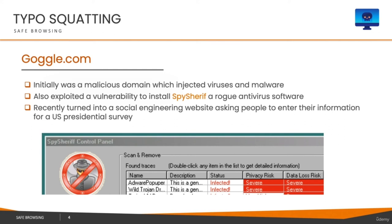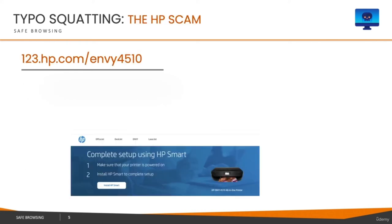Even Google — one of the biggest tech giants in the world — could probably not stop this. The reason is simple: once someone has registered a domain, it's very difficult to take it from them. People around the world buy these small variation domains of popular website names, get them registered, and then either misuse them or ask the actual company to pay a lot of money for them. Even if the company doesn't want to buy, no one can force the owners to give it up.